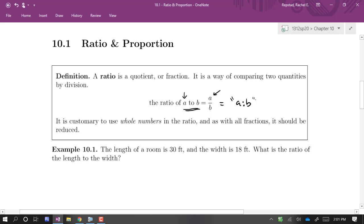It's customary to use whole numbers when possible with the ratio, just like with fractions, to reduce. So if the length of a room is 30 feet and the width is 18 feet, what is the ratio of length to width?